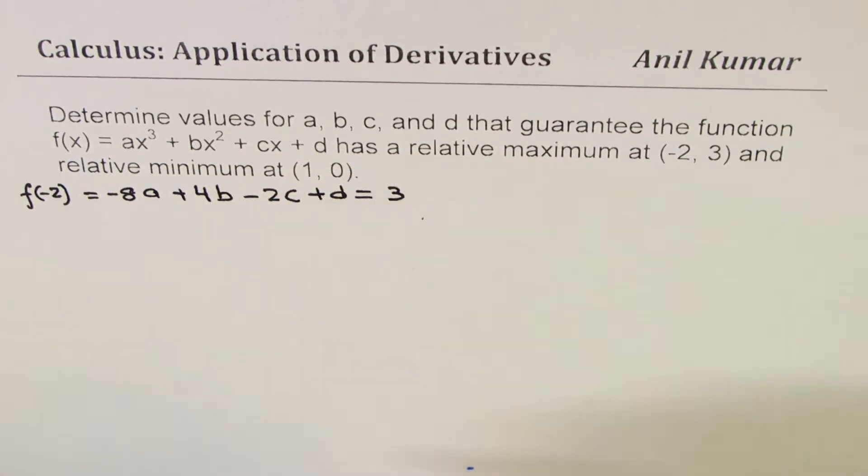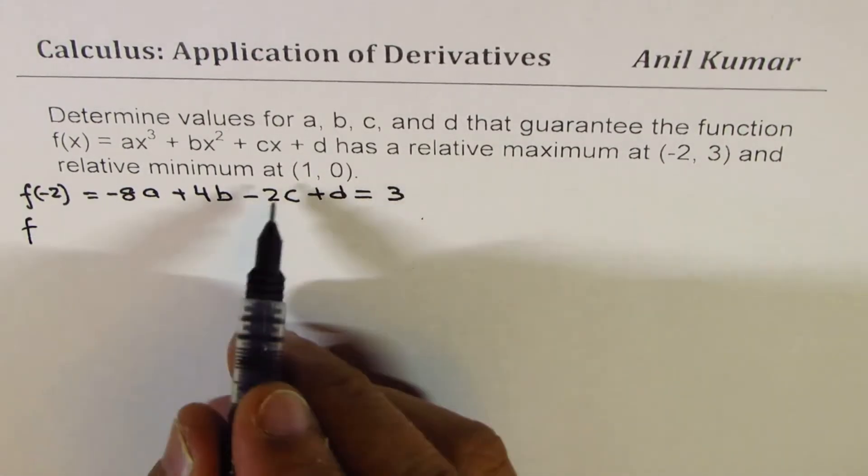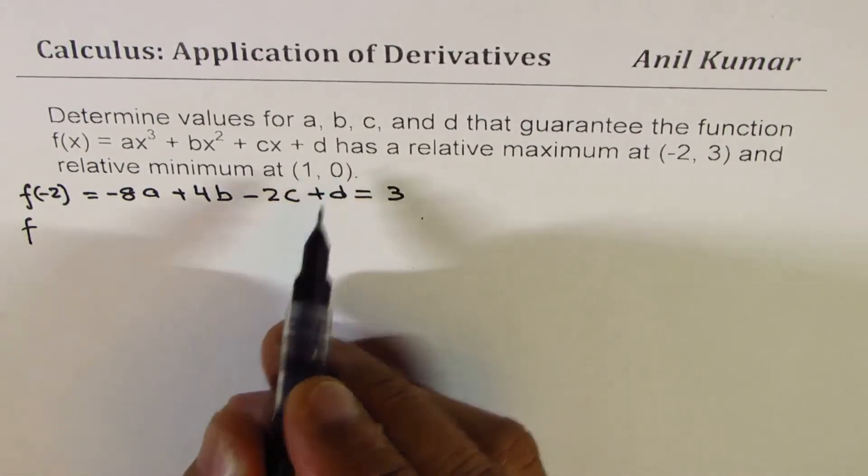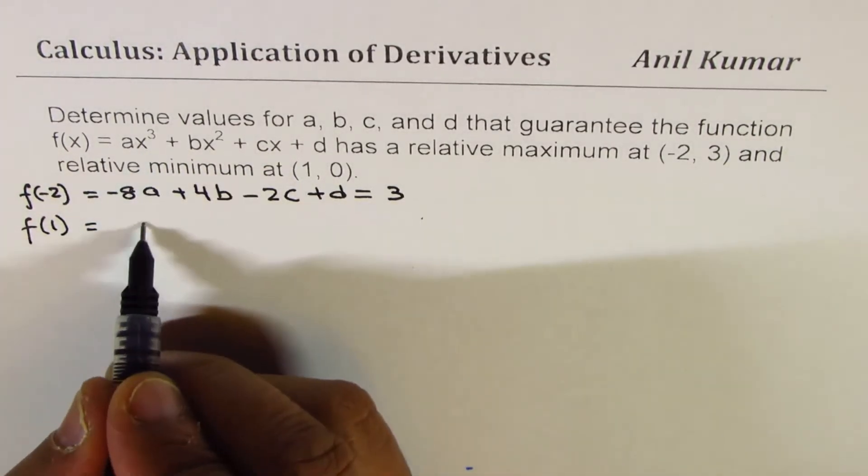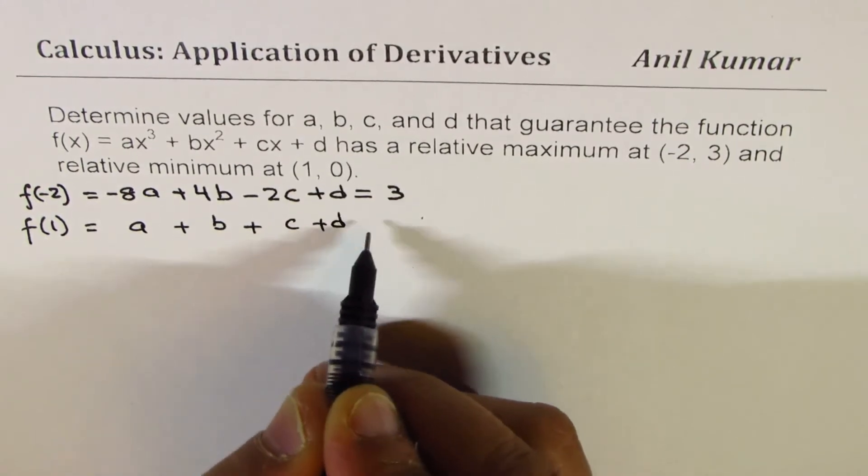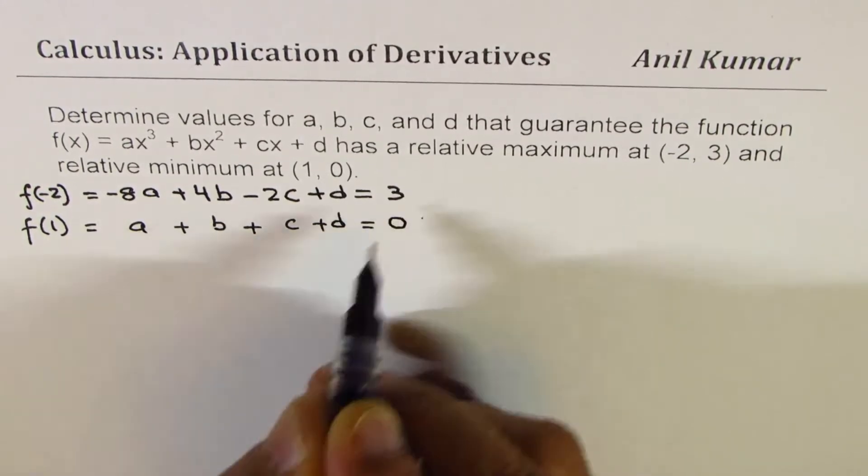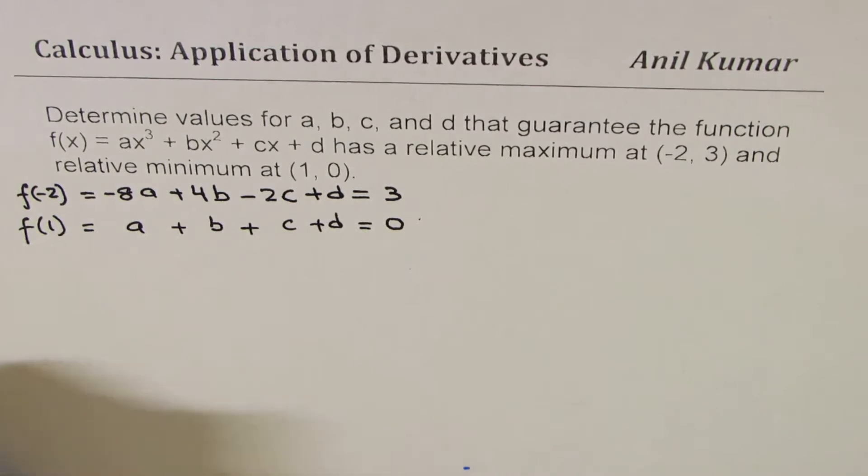Similarly, let's get the second equation from the condition f(1) = 0. So at f(1), if I substitute 1 here, I get a + b + c + d = 0. So these are my two equations. We can actually simplify these equations also.